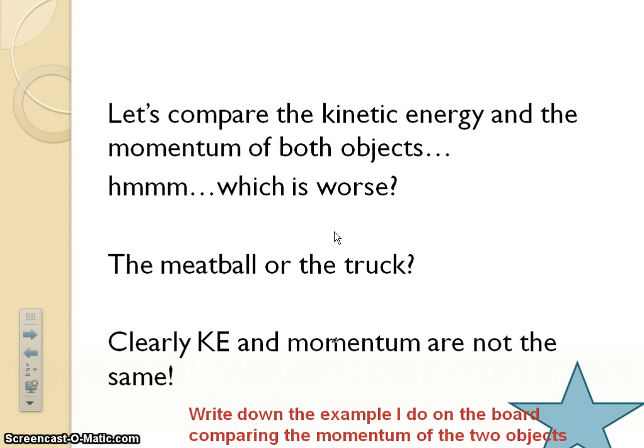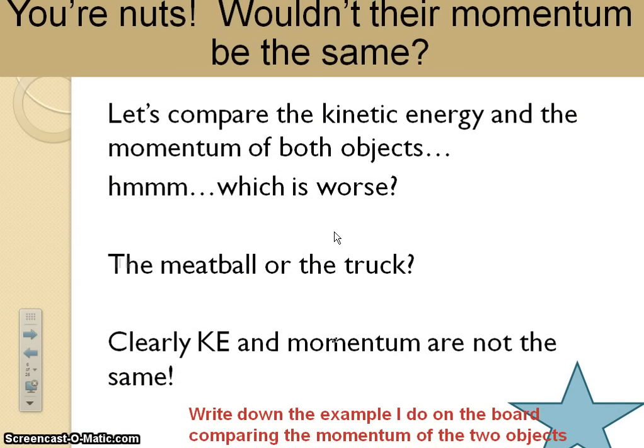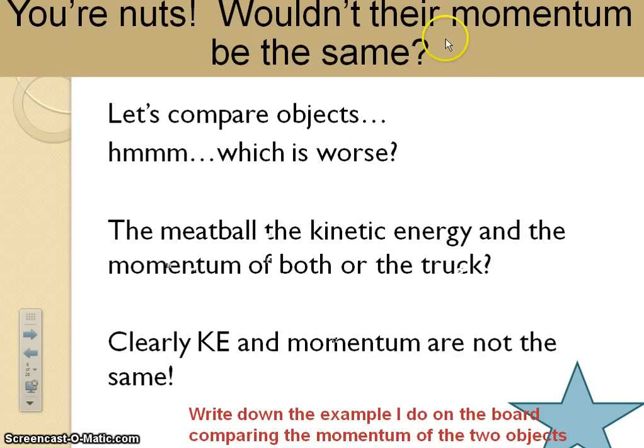And there's your answer for number five. We're going to skip number four for right now. Actually, let's talk about the kinetic energy and the momentum. Which one is worse between the meatball and the truck? Kinetic energy, we can figure it out by doing 1 half mv squared. So let's think about this.